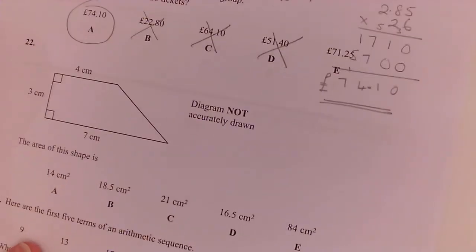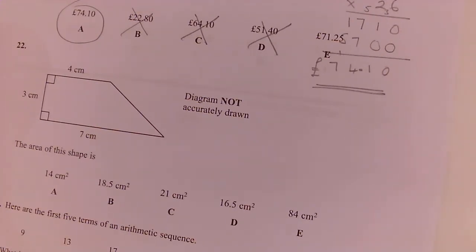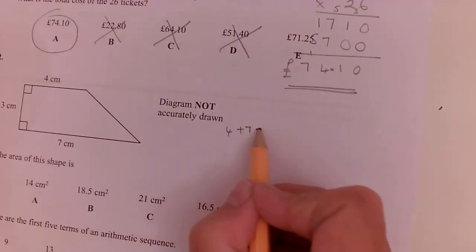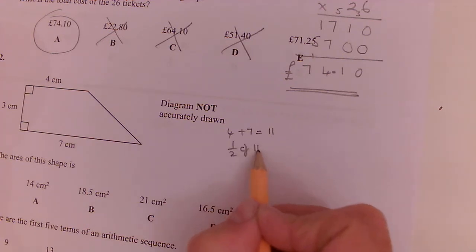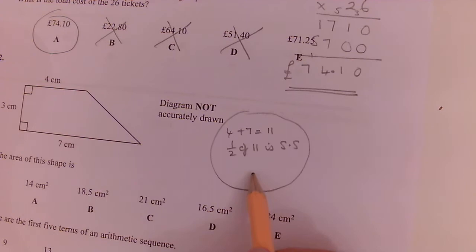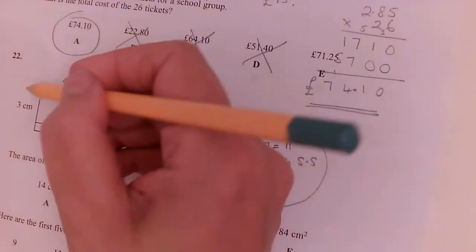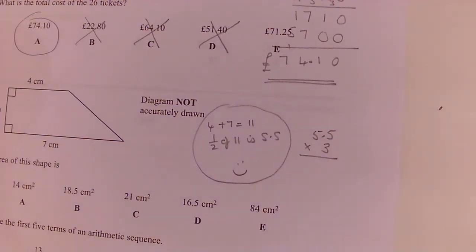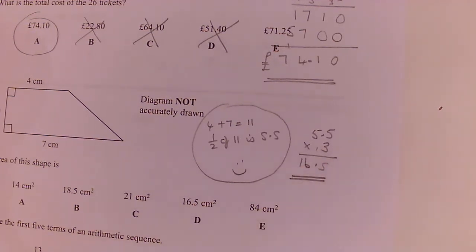Question 22. The area of the shape. Well, this is the trapezium. So we can use the trapezium formula. Half the sum of the parallel sides. So 4 plus 7 is 11. Half of 11 is 5.5. So half the sum of the parallel sides times the distance between them. So 5.5 times 3, or 3 lots of 5.5, and that would give me 16.5 centimeters squared.